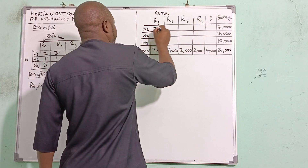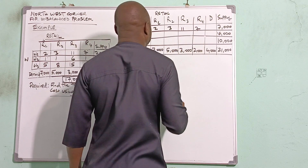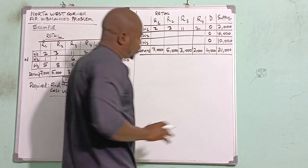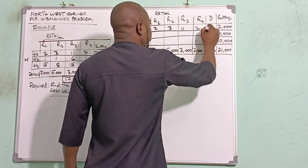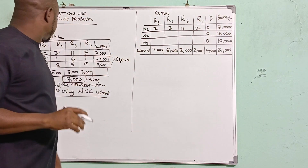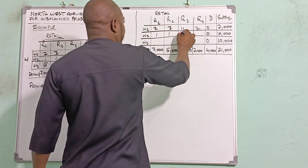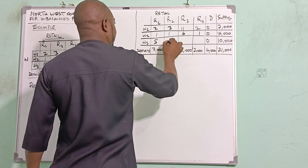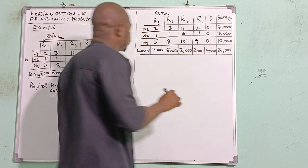Now let me add the costs: 3, 2, 11, 7 for the existing routes. The cost for the dummy column is always zero, since the dummy doesn't really exist — it's just a provision to make the problem balanced. The remaining costs are: 5, 8, 15, 9.